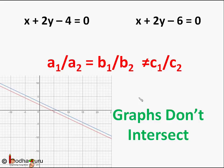To summarize: if a1/a2 ≠ b1/b2, then the graphs of the two linear equations will intersect, and that point is the common solution of the linear equations. If a1/a2 = b1/b2 but not equal to c1/c2, then the graphs of the two linear equations will be parallel — they will not intersect and there is no common solution.